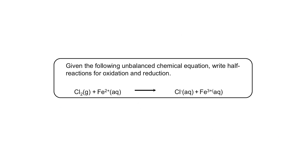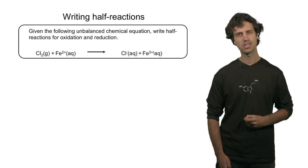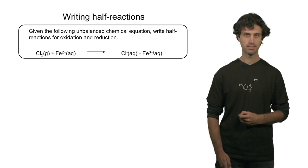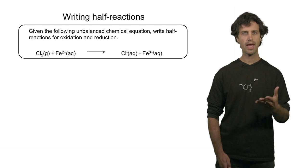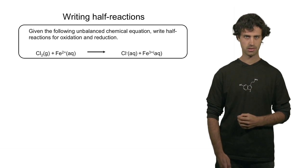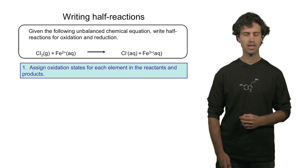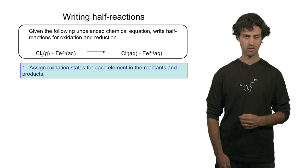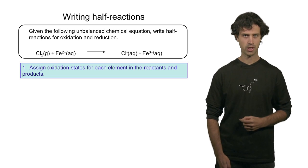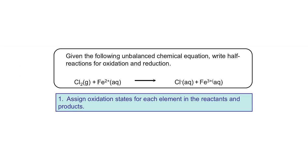Let us look at a redox reaction of chlorine with iron 2+ ions. This reaction is not balanced at this point, so let us try to balance it with the help of half reactions. The first step is to assign the oxidation states of each element. On the reactant side, we see chlorine molecules in their elemental form, which means the oxidation state of chlorine is 0.